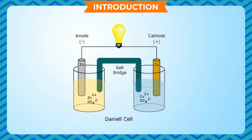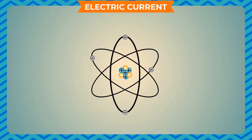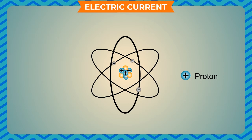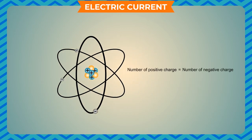We shall study how electricity can change a substance chemically. An atom is electrically neutral and is made up of positively and negatively charged particles. The positively charged particles called protons are heavy and remain fixed in their position. The negatively charged particles called electrons are lighter and free to move about. The number of positive and negative charged particles in an atom are equal.